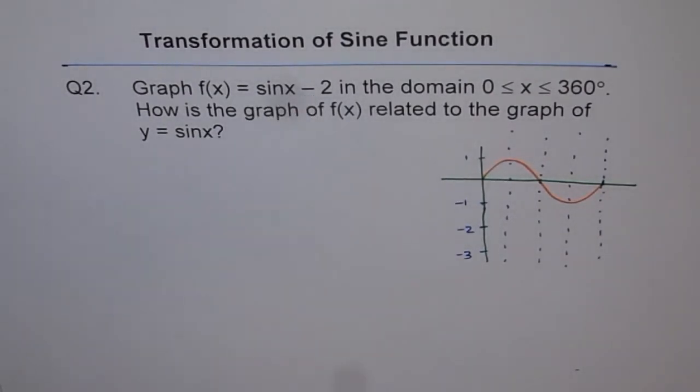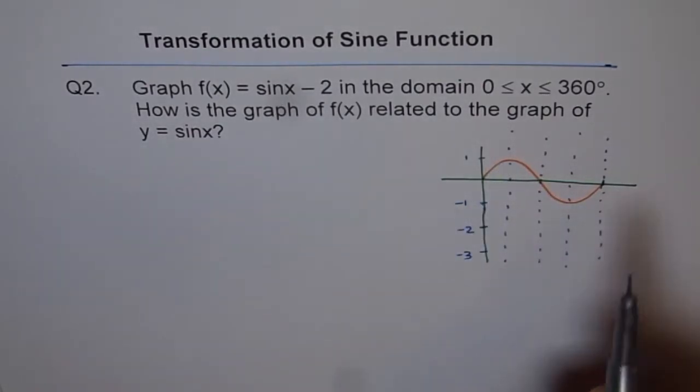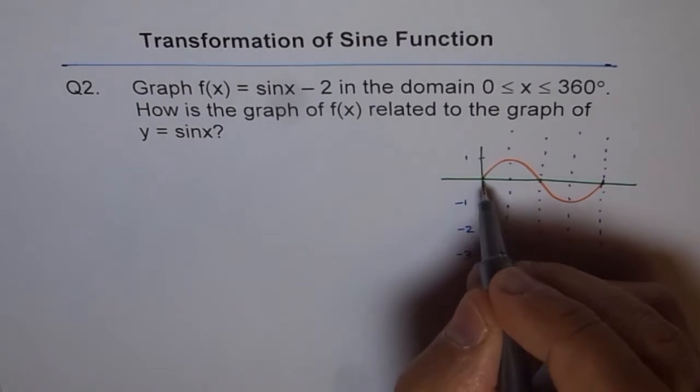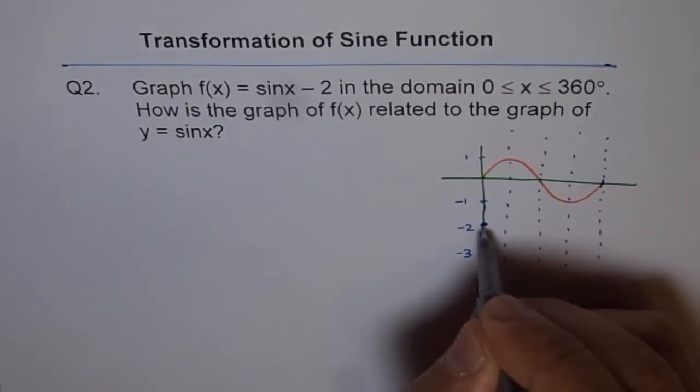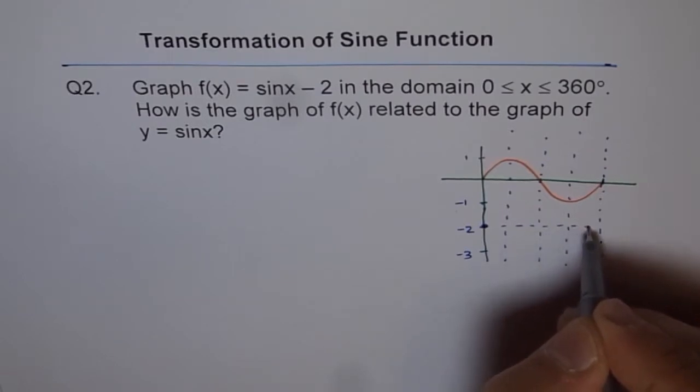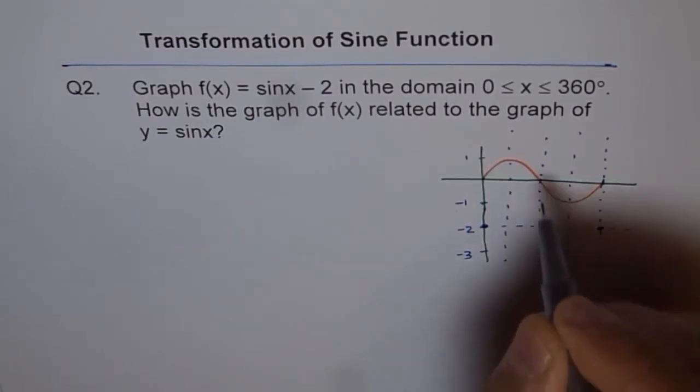Now the function sin(x) - 2 really means that we have shifted this wave two units down. That means this point will come from here to this place. This point will be here. So let me first draw this axis of symmetry. These are the points on the axis of symmetry.